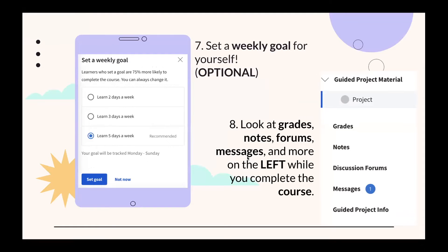This is optional, but you can set a weekly goal for yourself — learners who set a goal are 75% more likely to complete the course. For example, you can choose two, three, or five days a week. You can also look at grades, notes, forums, messages, and more on the left side while you complete the course.